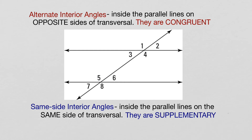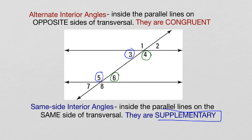We also have same side interior angles. Just like it sounds, they are on the same side — angle three is same side interior with angle five, and angle four is same side interior with angle six. Same side interior angles are always supplementary, so angle three plus angle five has to equal 180 degrees, every single time.